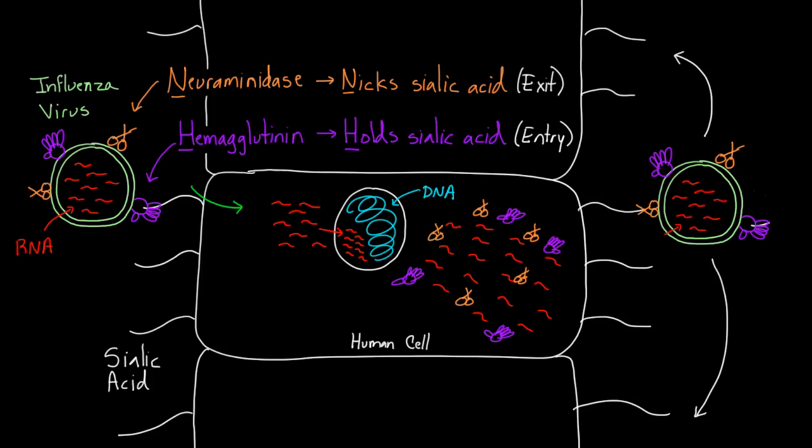But we still haven't answered the question, how does all this cause our symptoms? Well, what happens is that as these cells get turned into factories, they start dying or getting damaged. And all of their contents start leaking out. As they do, they create inflammation.